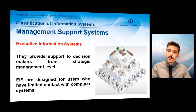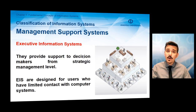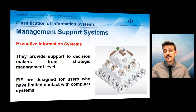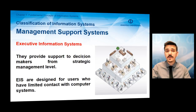The third type of management support system is executive information systems. Executive information systems provide support to decision makers at the strategic management level. They are designed for users who have limited contact with computer systems — executive managers have basic computer skills but are not generally expected to have knowledge in programming and coding. Therefore, executive information systems typically have friendly graphical interfaces and are easy to use.